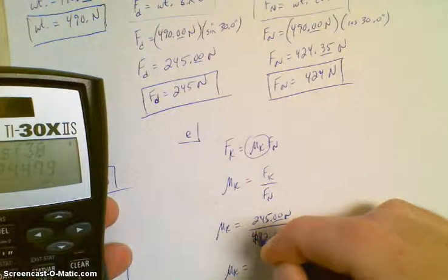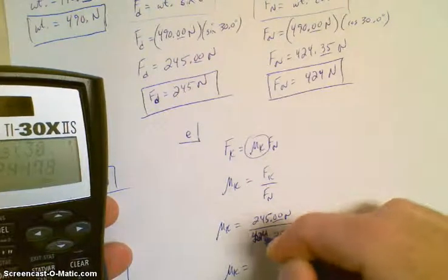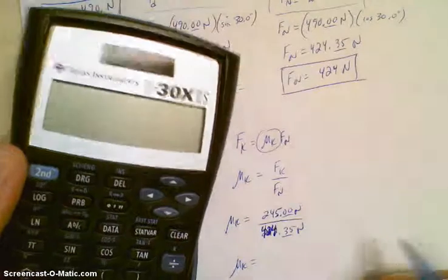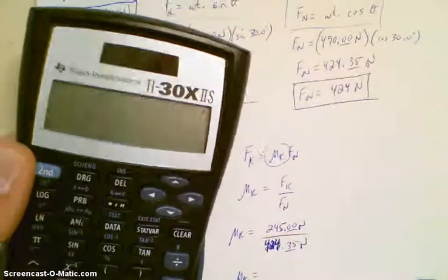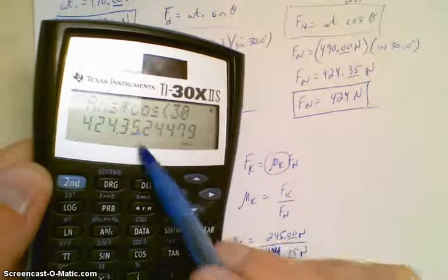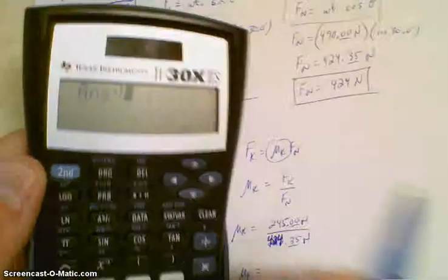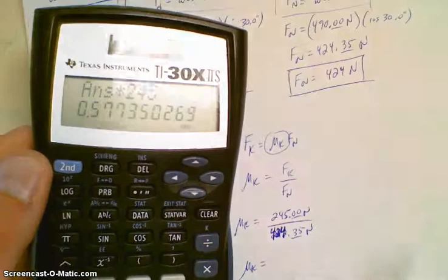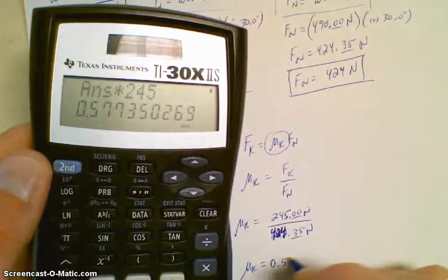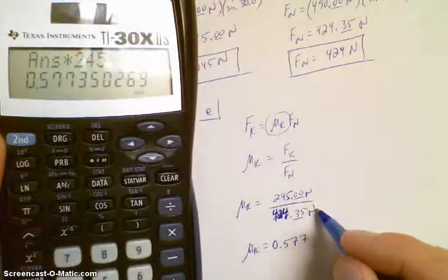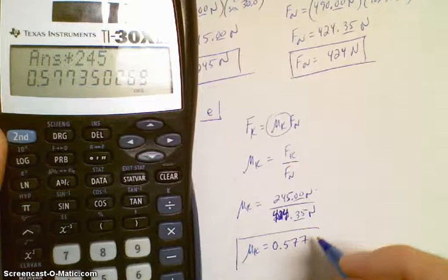So if I want to put that in... Wow. That's some dyslexia there. 424.35. There we go. Oh. Okay. There it is. And now we want to divide that into 245. So I'm going to just hit my 1 over X key. So that makes it an inverse. And then multiply that by 245. And there's my value. 0.577. What's the unit on that? Yeah, it's unitless. Newton divided by Newton is nothing. It's a coefficient, so it's just a number.